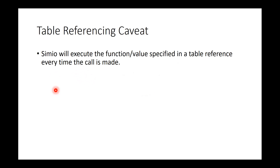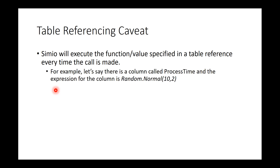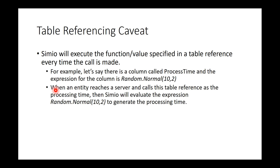Simeon will execute the function value specified in the table reference every time the call is made. So usually you'll have some tables set up with a column having all of the processing times. For example, let's say there's a column called process time and the expression for the column is random.normal with a mean of 10 and standard deviation of 2. So you create a model entity and you want to read this value as a processing time when it reaches a server — it's a very common technique. When an entity reaches the server and calls the table reference at process time, Simeon will evaluate the expression random.normal(10, 2) to generate the process time, exactly what you want.